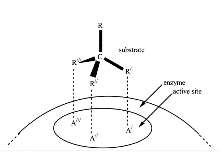Even if R' and R'' are chemically identical — as with the glycerol kinase reaction — the asymmetry of the enzyme-substrate complex means that only R' can react, providing binding site A''' is specific for R'''. R'' can never undergo reaction under these conditions, since it is not bound in the vicinity of site A', even when R' binds to A''. Similar considerations apply to enzyme-catalyzed reactions involving more than one substrate.